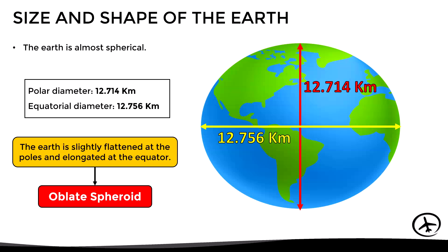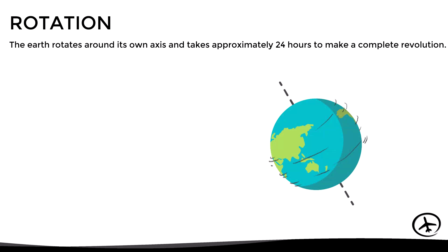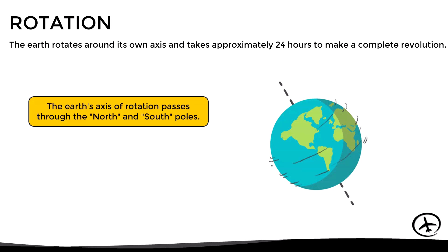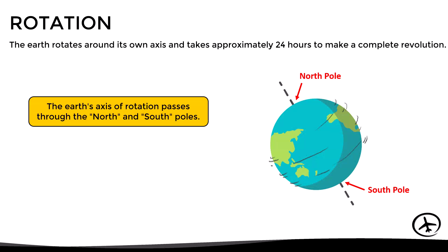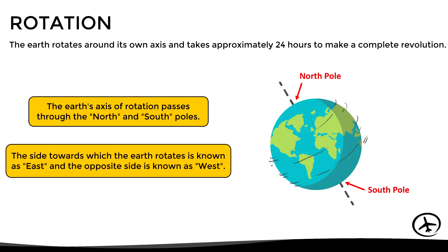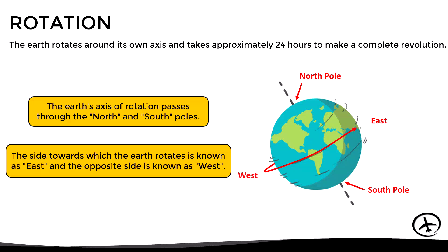The reason why the earth has this shape has to do with the centrifugal force it experiences when it rotates on its own axis. This movement is called rotation, and it takes around 24 hours for the earth to make a complete revolution. The points through which this axis of rotation passes are known as the north and south poles, which are often used as reference in navigation. The side towards which the earth rotates is known as east, while the opposite side is known as west.